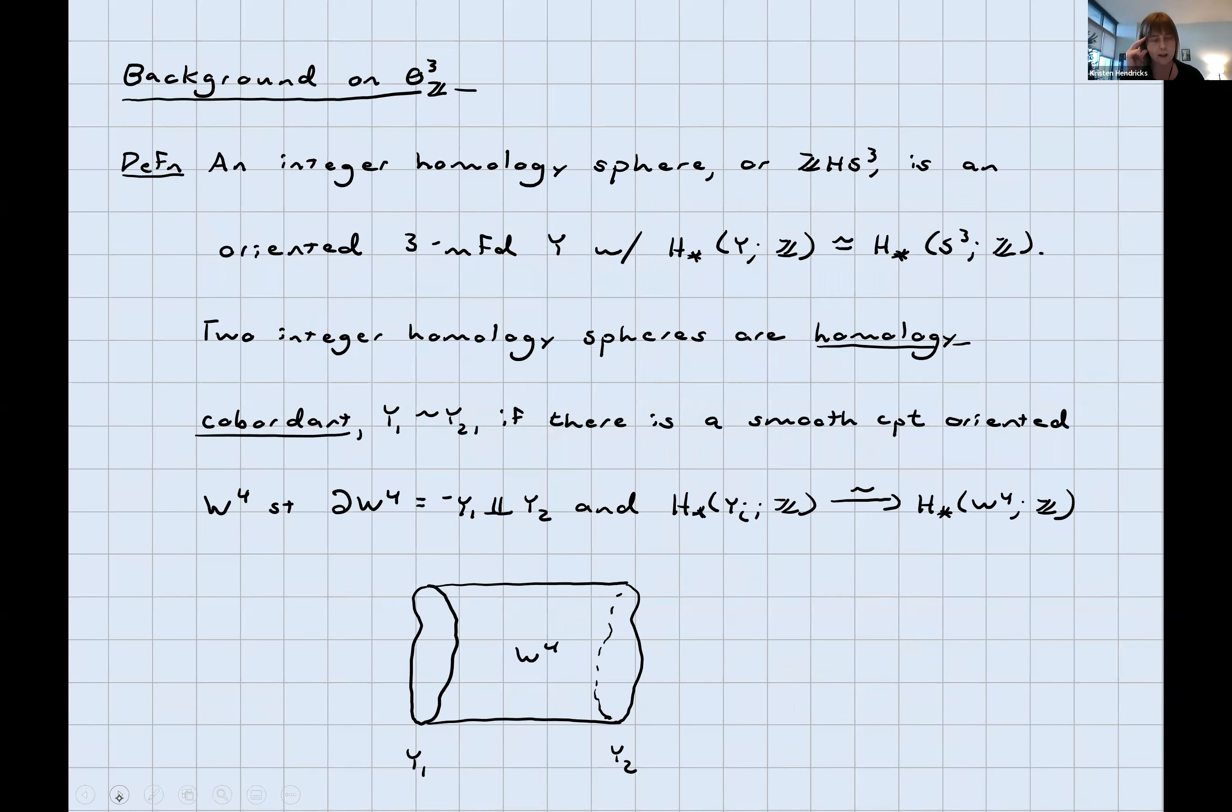What are our protagonists today? We're going to think about integer homology spheres. These are closed-oriented three-manifolds with the same integer homology as the three-dimensional sphere. These are things that can't be told apart by homology from just being S3. We're going to think about these up to an equivalence relationship called homology cobordism. Two integer homology spheres are homology cobordant if there's a smooth, compact, oriented four-manifold between them, whose boundary is the disjoint union of minus Y1 and Y2, such that inclusion on either end induces an isomorphism on homology.